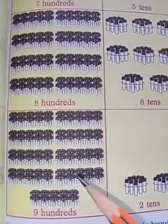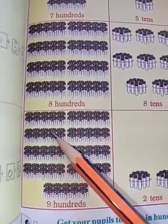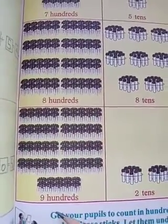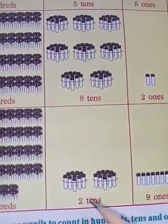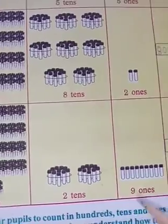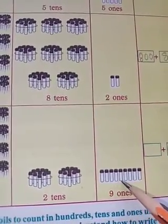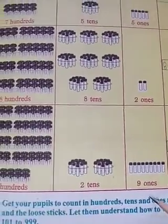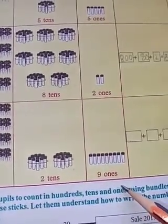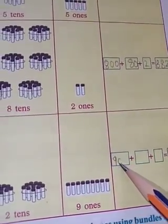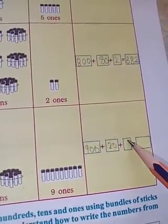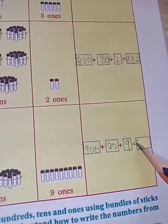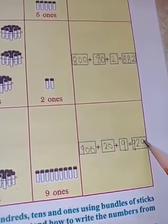Next one. Nine hundreds. How many tens? Two tens. How many ones? One, two, three, four, five, six, seven, eight, nine — nine ones. Nine hundreds, two tens, nine ones. Two tens means twenty, nine ones means nine. Nine hundred and twenty-nine.